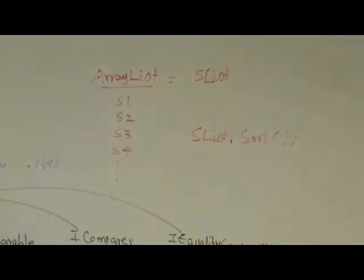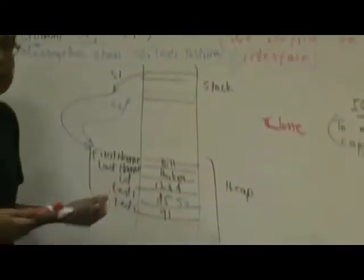So now the array list already gives us a sort method. So it already has a quick sort implementation. So if we call the sort, it will rearrange all the students that we have, but in which order? Okay? Will it order them by first name? Will it order them by last name? Or ID? Or test one and test two?